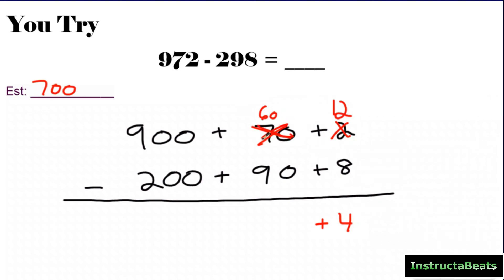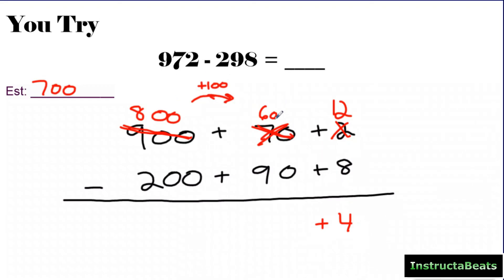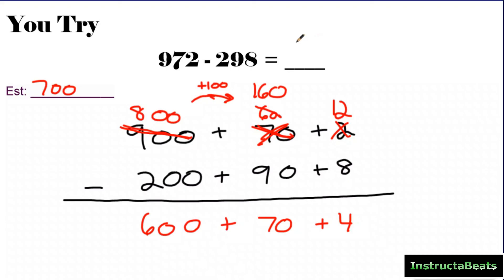Now I have 60 because I already borrowed from the 70. 60 minus 90 — 90 is bigger than 60, so more on the floor, go next door and get 10 more. We're talking about 10 tens because we're in the tens place. I take one of my hundreds and give it to the 60 — unbundle it and add it to what I already have. So 160 minus 90 is 70. Then 800 minus 200 — more on the top, no need to stop. The difference should be 674, which is pretty close to my estimate.